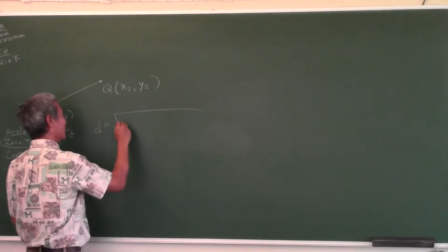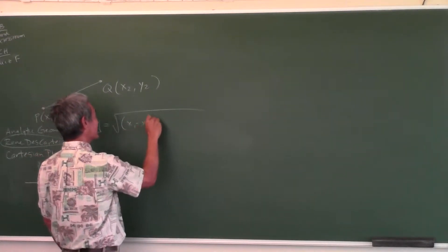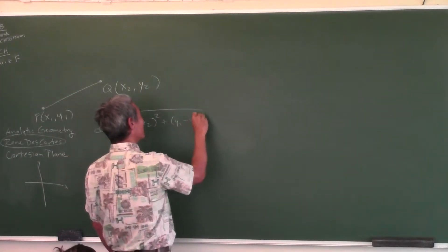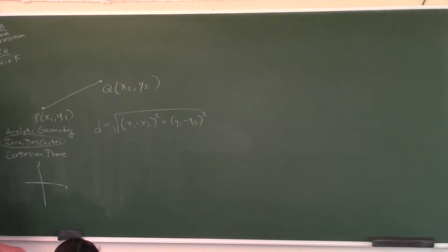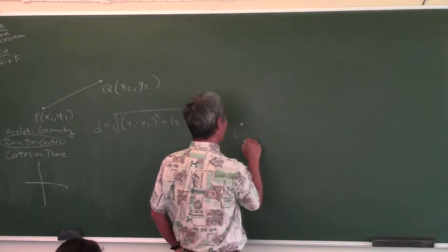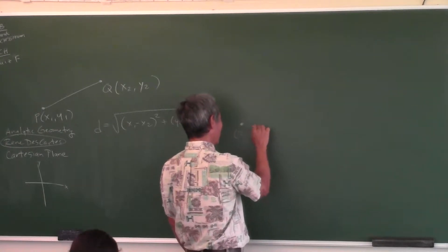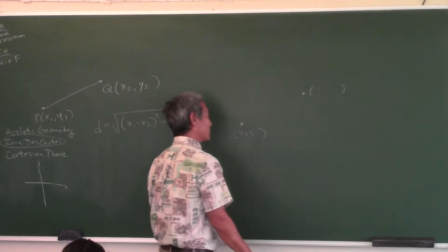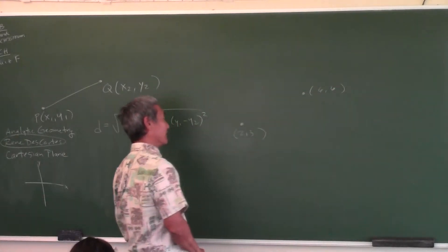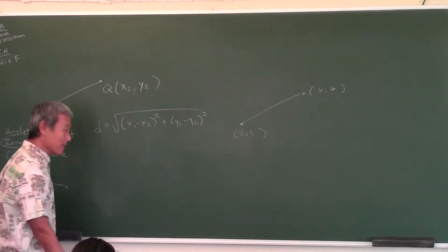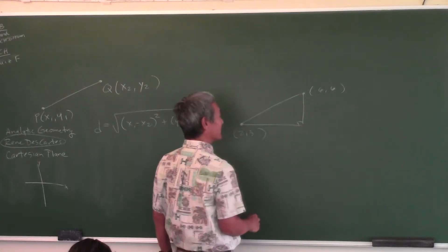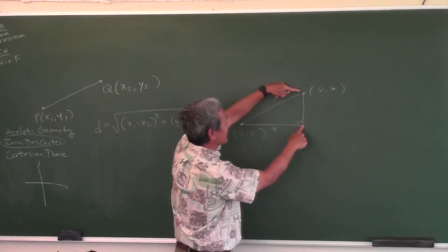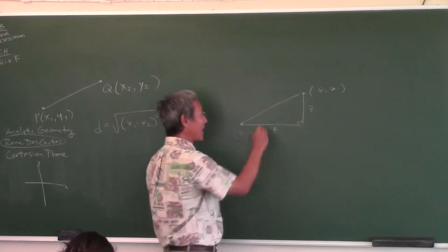The distance formula is the square root of (x₁ minus x₂) squared plus (y₁ minus y₂) squared. What if you're on a quiz and you can't remember it? If you have points like (2, 3) and (6, 6), you make a right triangle. How far from 2 to 6? Four. How far from 3 to 6? Three. So three-four-five — that's a Pythagorean triple.